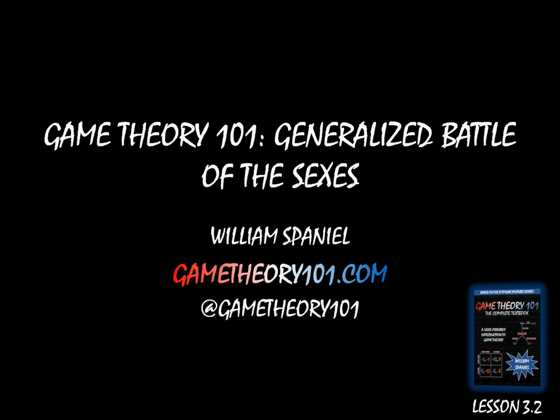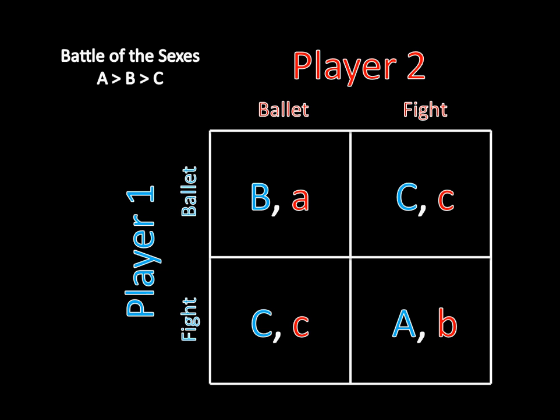Now, let's look at the game we're going to be looking at today. I briefly talked about this in the last video — I previewed this — and now we're actually going to tackle it. So, we have a Battle of the Sexes game. Both players can either go to the ballet or go to the fight, and their payoffs are listed on the screen. Notice that these aren't precise numbers — it's not like 0, 1, or 2. Instead, it's A, B, or C.